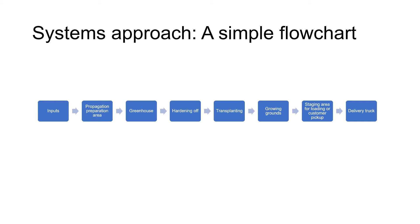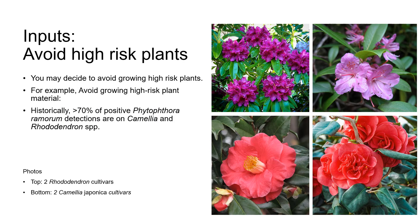Let's look at some of the steps we can take to improve our nursery hygiene, starting with our inputs: plant material, containers and potting media. One strategy of reducing risk might be to avoid growing high risk plants. For example, in nursery inspections over 70% of positive Phytophthora ramorum detections used to be on camellia and rhododendron. Right now, high risk plants in California might be considered any citrus and members of the citrus family that are hosts to the Asian citrus psyllid and HLB.